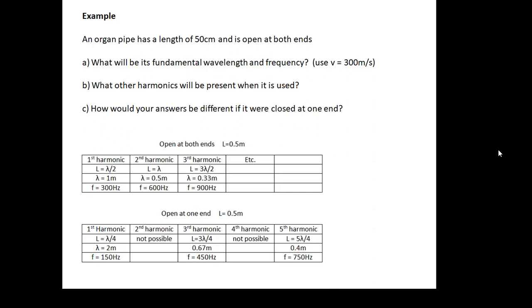If we close one end of the tube, it will be very different. For the first harmonic, it's a quarter of a wavelength, so the wavelength will be 2 metres — four times the length of the tube. My fundamental frequency this time will be 150 Hz. If open at both ends it's 300 Hz; if closed at one end it's 150 Hz — a very different fundamental frequency. Also, the second harmonic isn't possible, the third harmonic is, the fourth isn't, the fifth is. We only get the odd harmonics, so the frequencies present will be very different and the tube will sound very different.